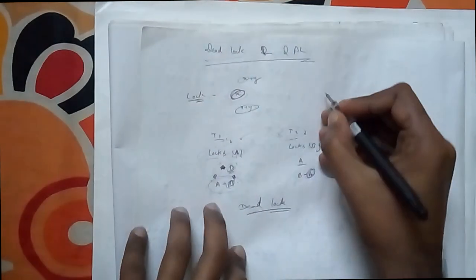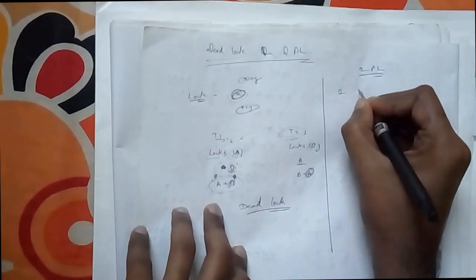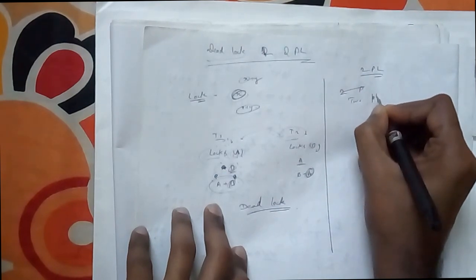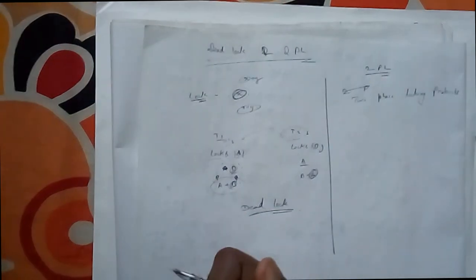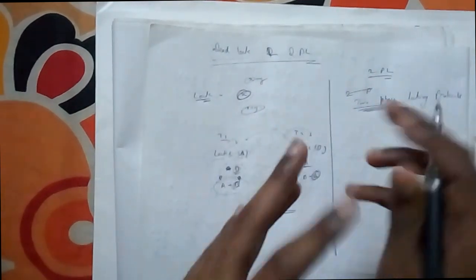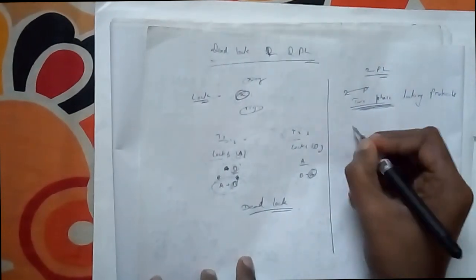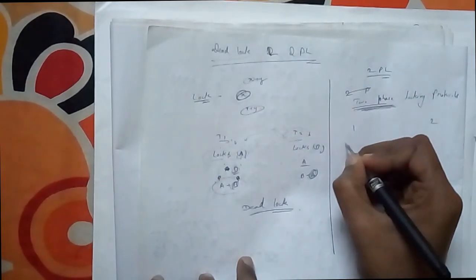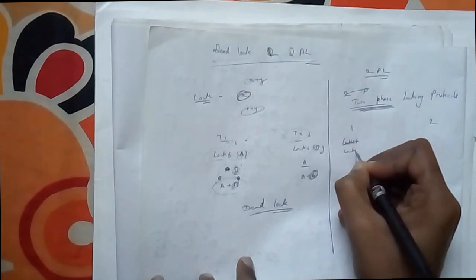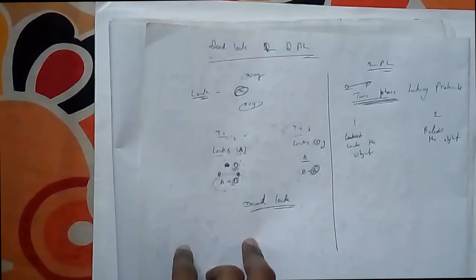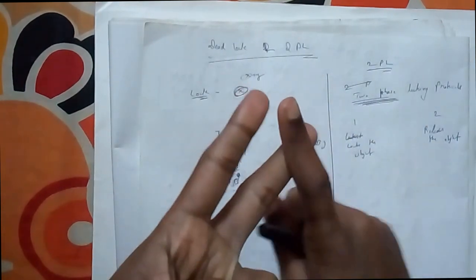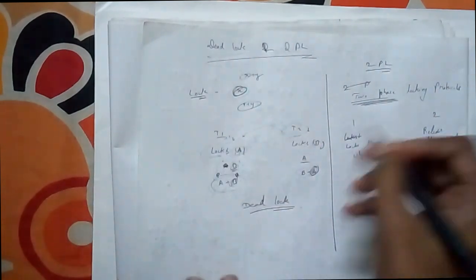For deadlock prevention, the first and simplest method is 2PL. The full form of 2PL is Two Phase Locking Protocol. As the name suggests, it has two phases. In phase one, it locks the object; in phase two, it releases the lock. The definition of 2PL: it is a protocol that works in two phases — in one phase it locks the object, in the other phase it releases the lock on the object.